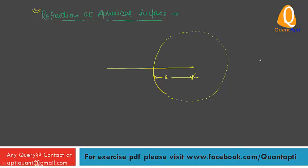The law of refraction means if light is incident at any point, it makes an angle I with the normal. For a spherical surface, what will be the normal? For a plane surface, the normal is perpendicular to the surface. For a spherical surface, the normal is perpendicular to the tangent, which passes through the center of curvature. So this is the normal, and this is the radius of curvature R.